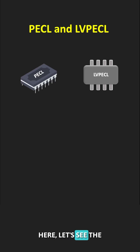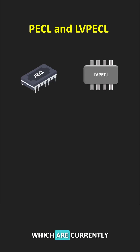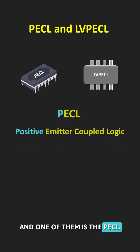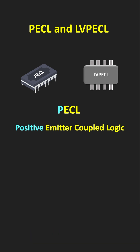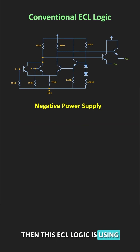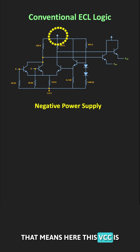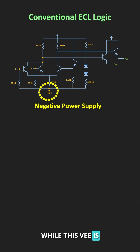In this short video, let us see the two different versions of the ECL logic which are currently used commercially. One of them is the PECL, which stands for Positive Emitter Coupled Logic. Conventionally, this ECL logic uses a negative power supply, meaning VCC is connected to ground potential while VE is connected to minus 5.2V.